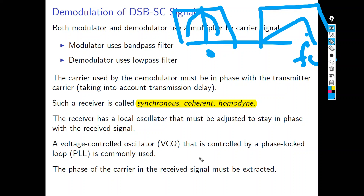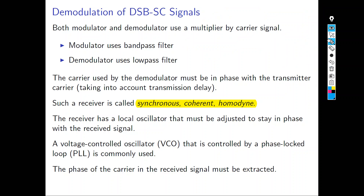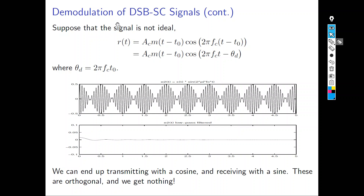For demodulation of a double sideband signal, if the received signal is not ideal and has a time shift of t − t₀, this causes a phase shift θ = 2πfc·t₀. If this shift is large enough to produce one full cycle of phase difference, the demodulated signal output becomes zero. This demonstrates the critical importance of phase synchronization.